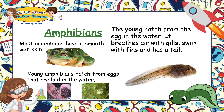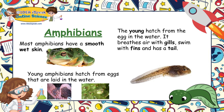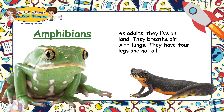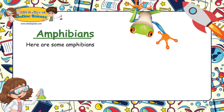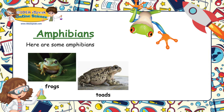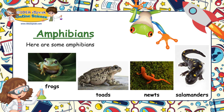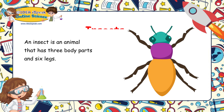The young hatch from the egg in the water. They breathe air with gills, swim with fins, and have a tail. As adults, they live on land — they breathe air with lungs, have four legs, and no tail. Here are some amphibians: frogs, toads, newts, and salamanders.